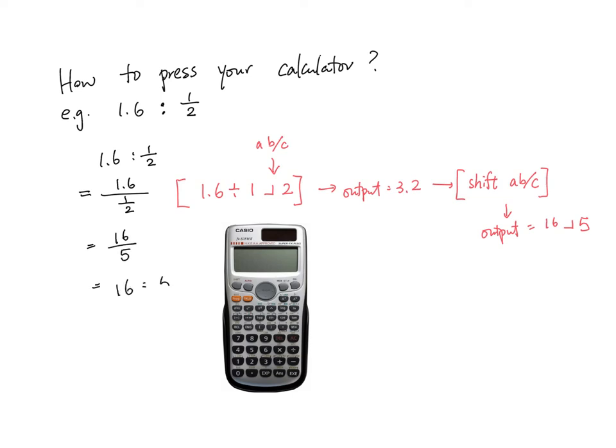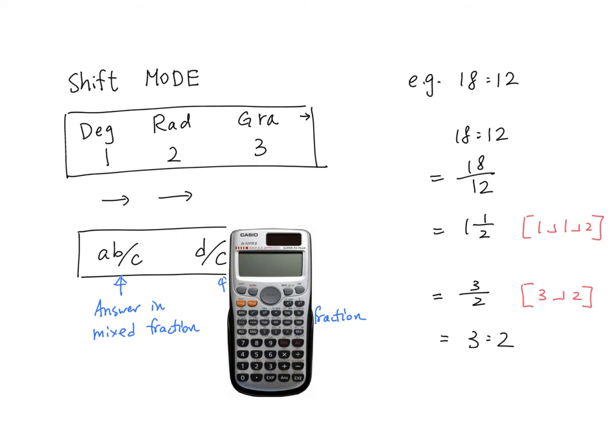So the final answer is 16 over 5. I just want to share some more about the calculator setting. I will give an example: 18 divided by 12. If you press the calculator button you will press 1 over 2.